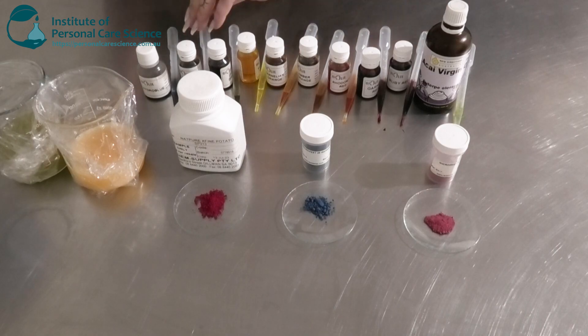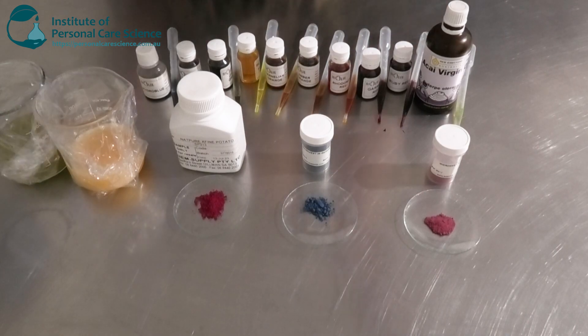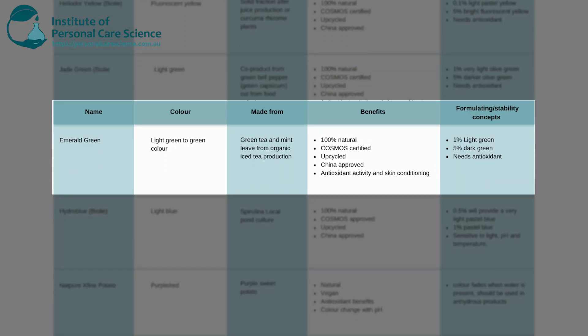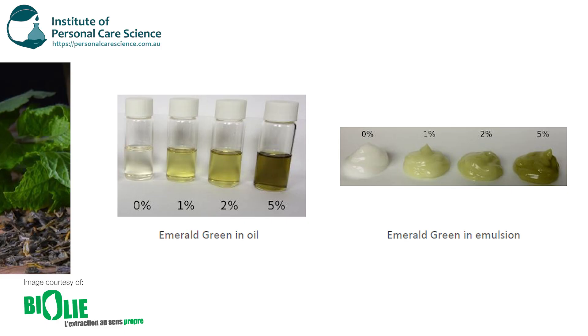The next green from Biola is the Emerald Green, which provides light green to green in color. It's made from green tea and mint leaves from organic iced tea production — another upcycled material. It's 100% natural, Cosmos certified, China approved, with antioxidant and skin conditioning benefits. In emulsion, 1% provides a light green color, and 5% provides a dark green color.